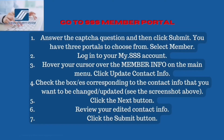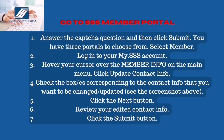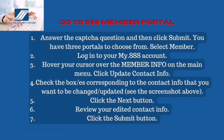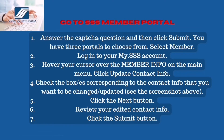How to update your contact information via My SSS: Go to the SSS member portal, answer the CAPTCHA question, and then click Submit. You have three portals to choose from — select Member. Log into your My SSS account, hover your cursor over the Member Info tab, and click the Submit button.